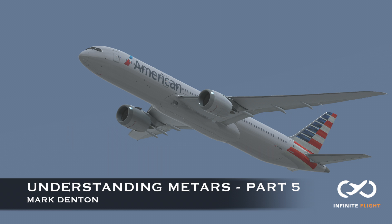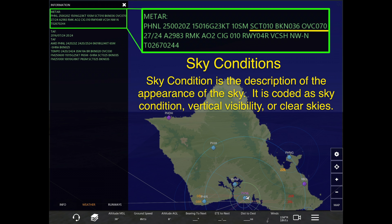Hey guys, welcome back to another Infinite Flight video training series. My name is Mark. Today we're going to be going over part five of understanding METARs and discussing the sky conditions. By sky condition I'm speaking of the description of the appearance of the sky, cloud cover, how it's broken down, how it's coded — which is basically the sky condition, the vertical visibility, or simply clear skies.